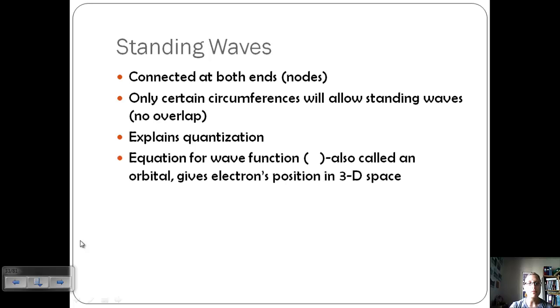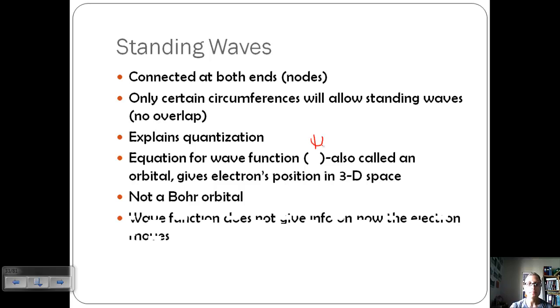The equation for the wave function is this weird symbol. It's also called an orbital and it gives the electron's position in 3D space. It's not a Bohr orbital, so don't get those confused. This is more 3D. A wave function does not give information on how the electron moves. We're just getting more its position, not how it got there.